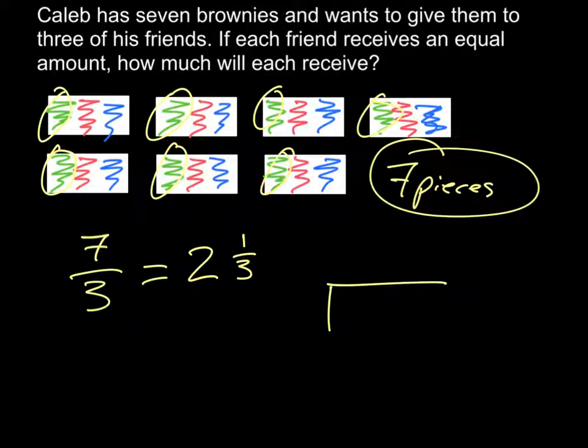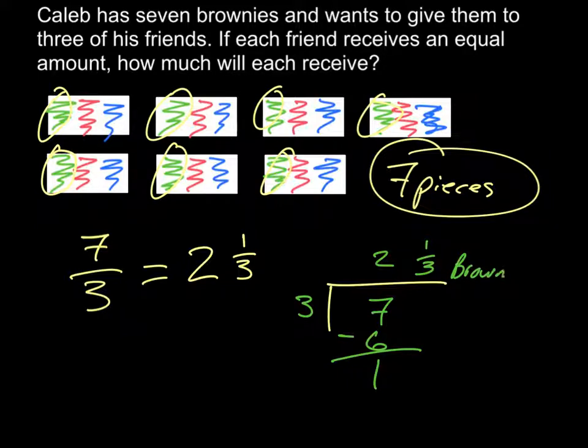We could also set it up as we would with a regular division problem, where we have seven divided by three. And then as we solve it, we have two pieces, which gives us our six. And there's a remainder of one, which we would write as one-third. So each person will receive two and one-third of a brownie. And you notice the brownies are rectangles. Does the shape really matter? No, not really. You can use circles, but I found rectangles easier.